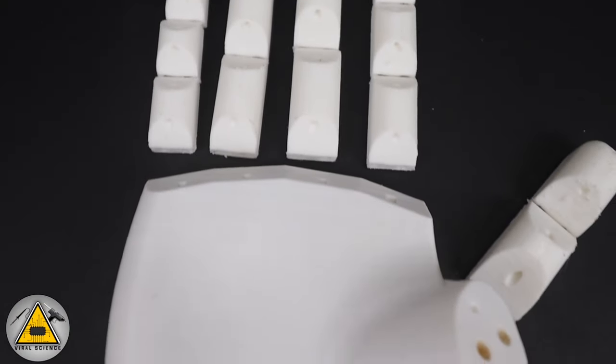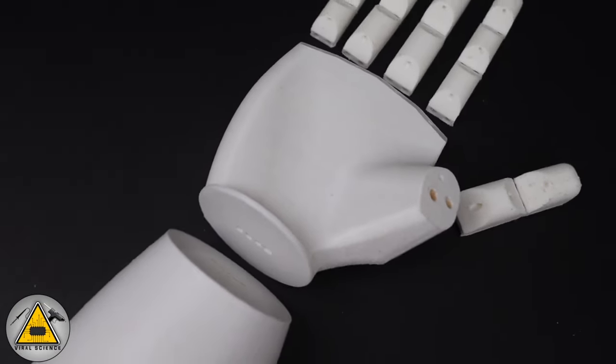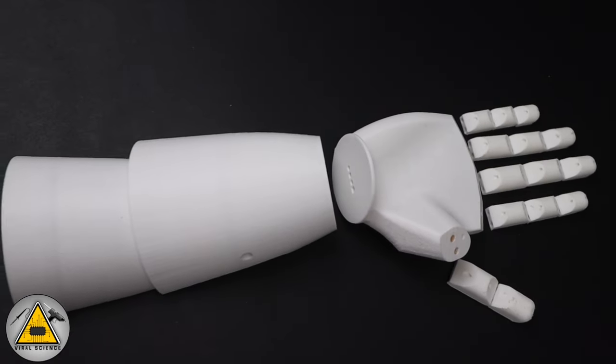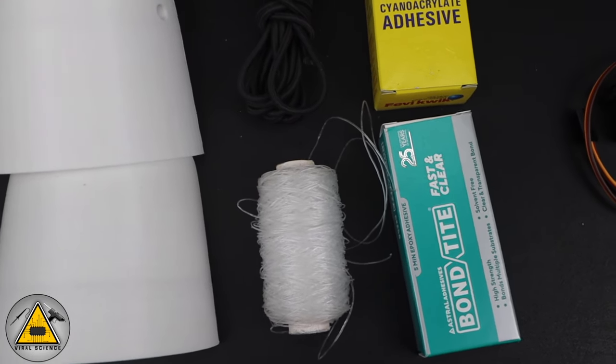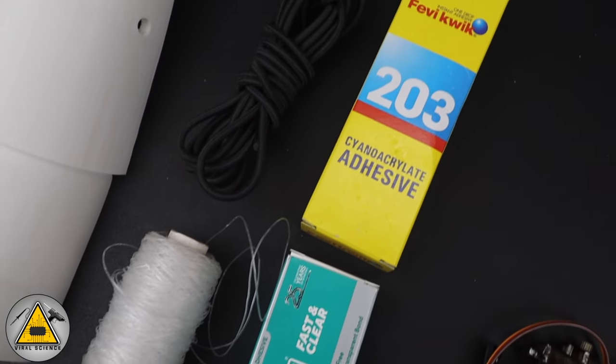So here are all the 3D printed parts ready for our robo hand. With this you will need a transparent string, some adhesives to stick it, and also you will need a 2mm elastic band to connect the fingers.